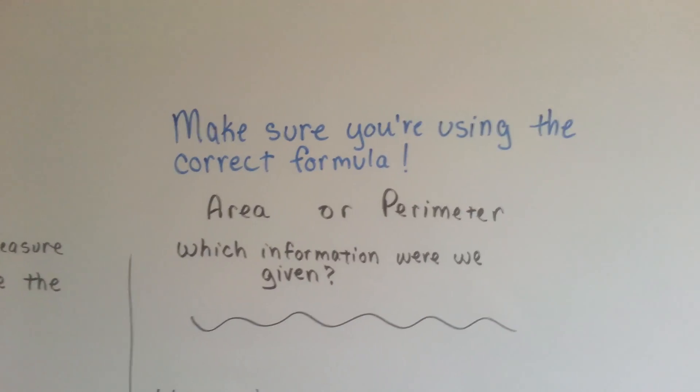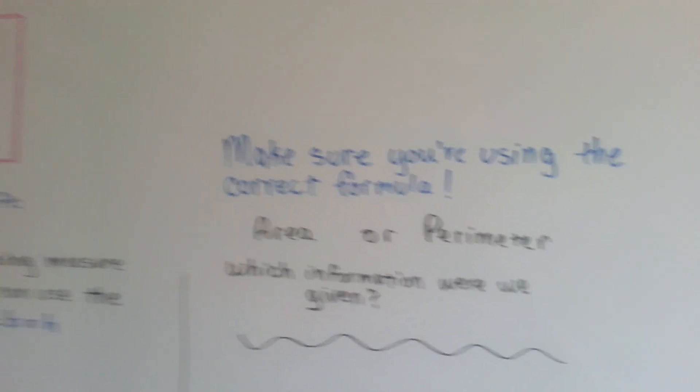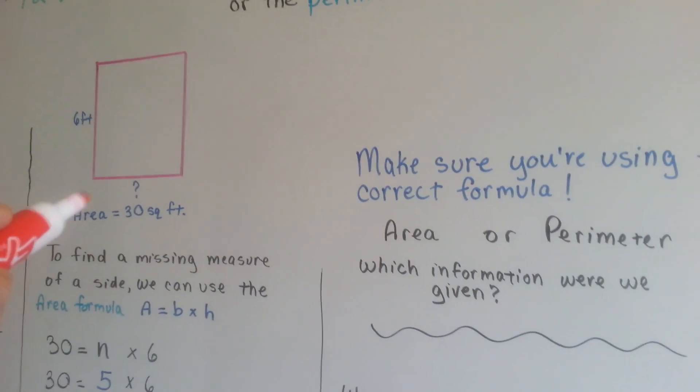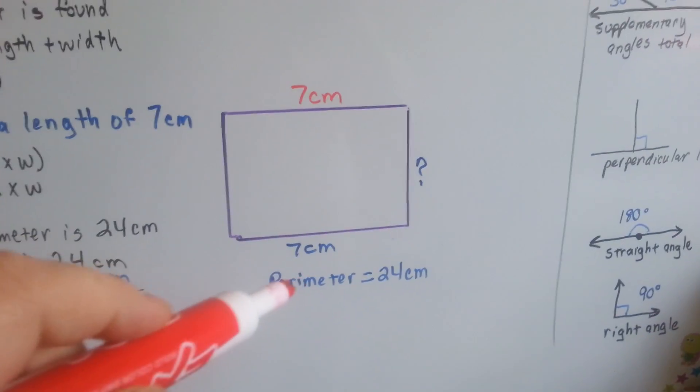You have to make sure you're using the correct formula, area or perimeter. Which information were you given? Were you given a side length and the area, or were you given a side length and a perimeter?